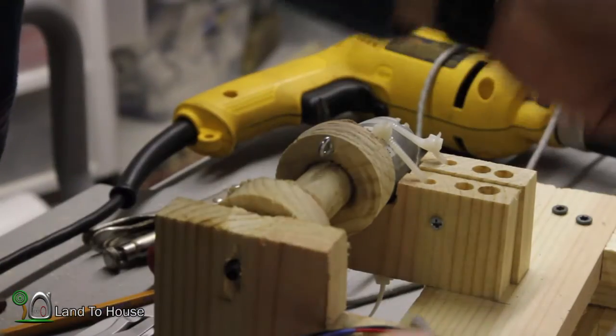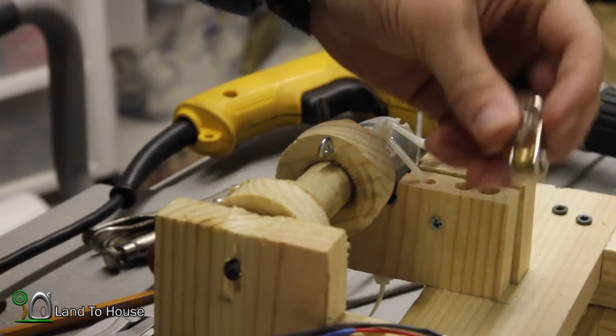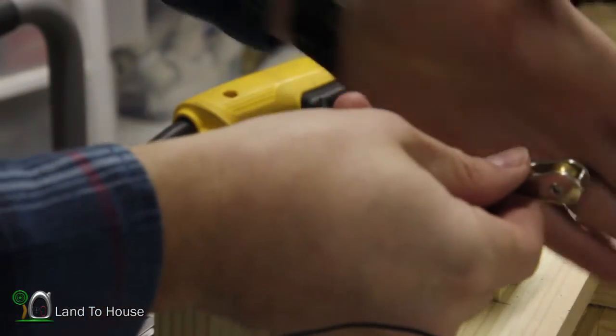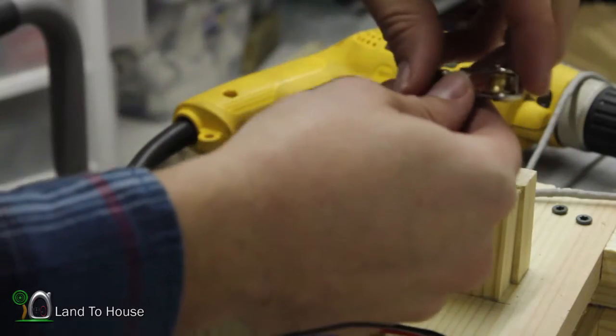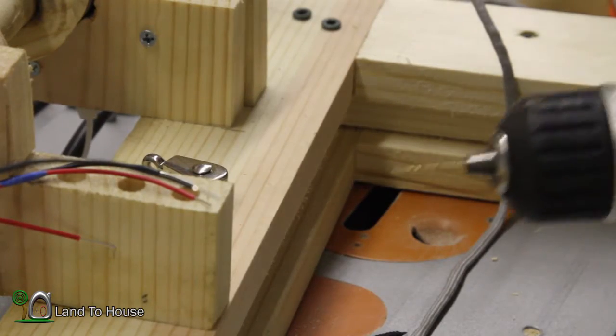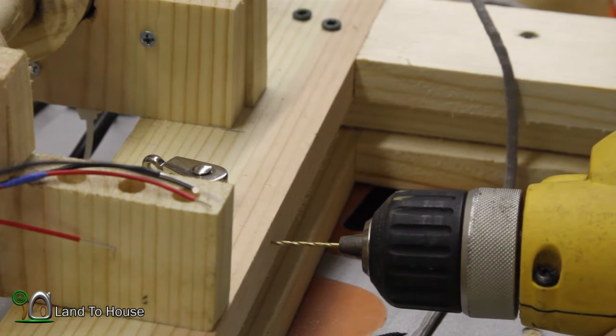Now before we tie this off, I have got this little swivel here that I want to install, and it's going to guide our pulley in the right direction. So let's get this thing installed right down here. I don't want to split the wood so I'm going to just put a little pilot hole here right in the middle of the spool.